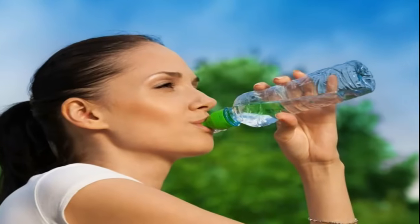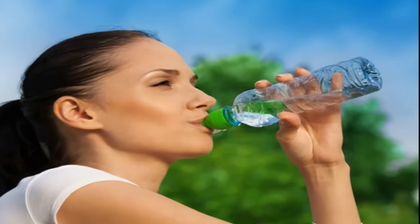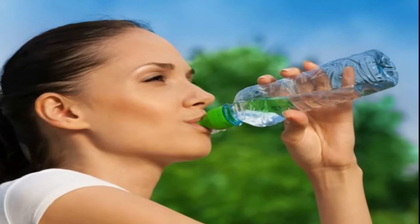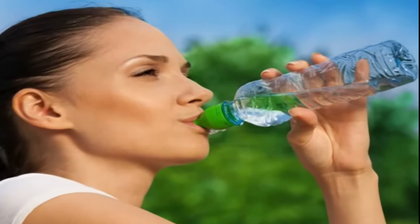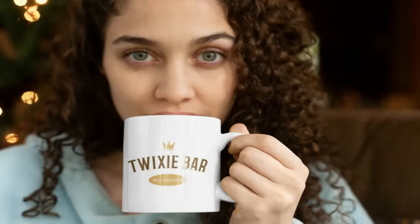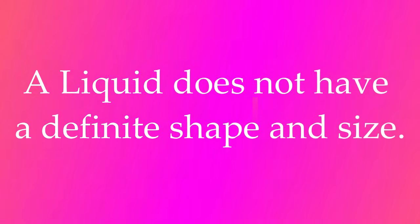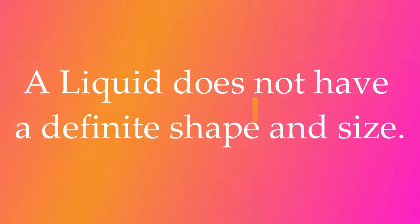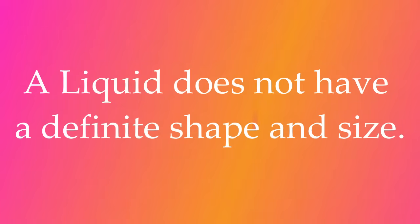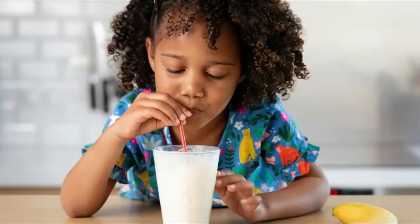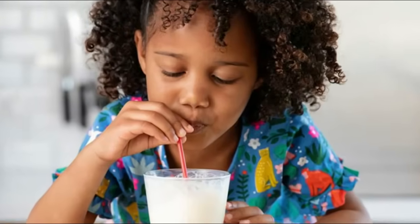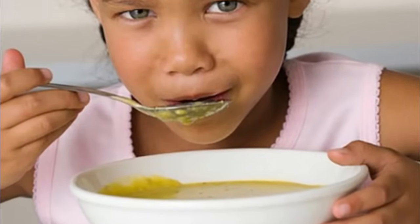When you drink water during breakfast today, it may have been placed in a drinking glass, cup, or mug. Whichever container it was placed in, the water did not have its own shape. If you pour water that is in a drinking glass into a cup or mug, the water will take up the same amount of space. This is because water has a definite volume.